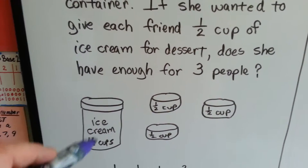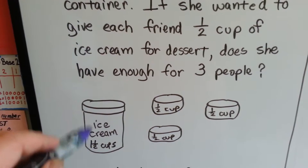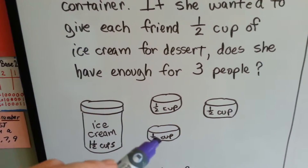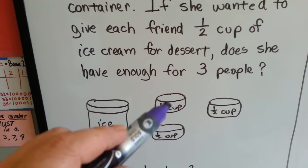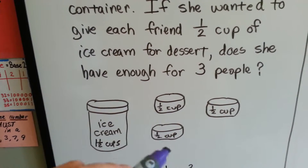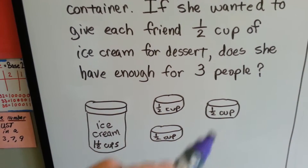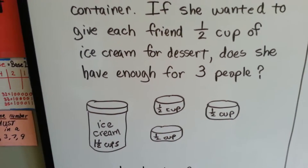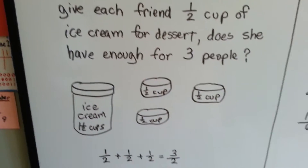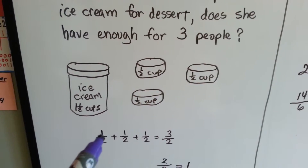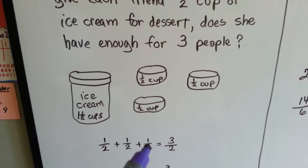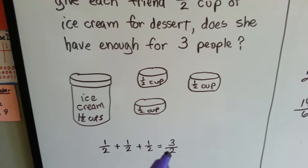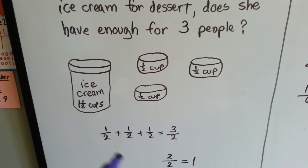She's got a container of ice cream with one and a half cups in it. Half a cup and a half a cup is a whole cup, and then we've got another half cup. Does she have enough for three people? Yes, she does. A half plus a half plus a half makes three halves — three over two.